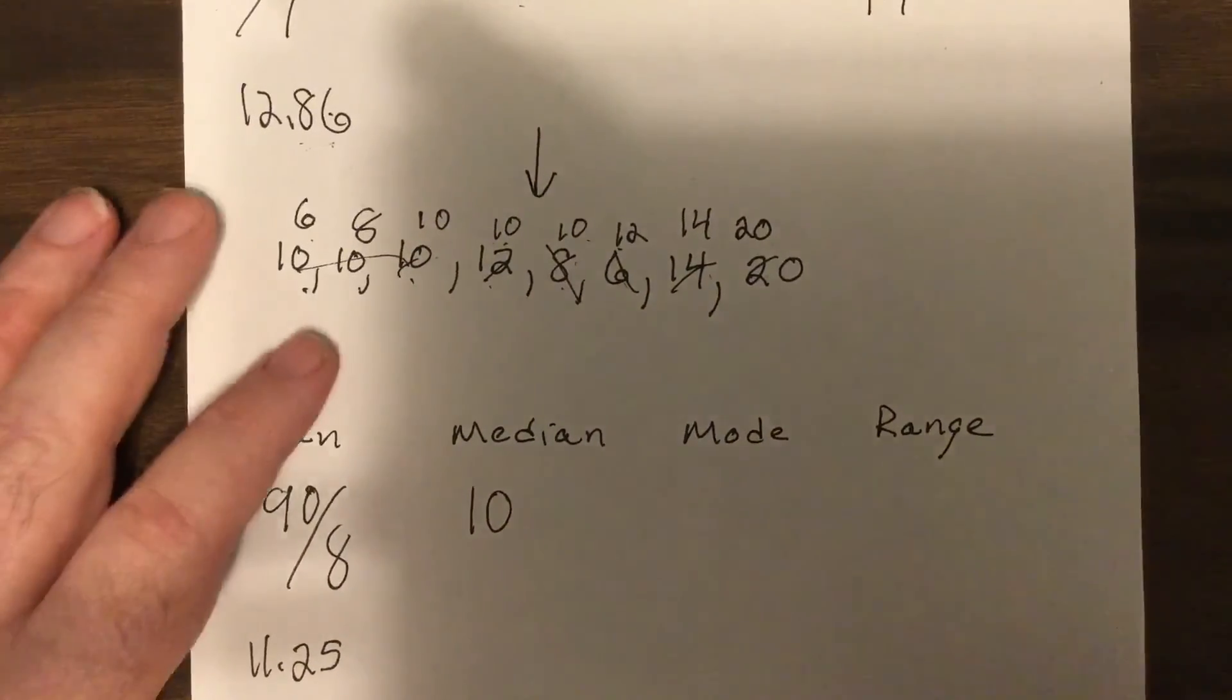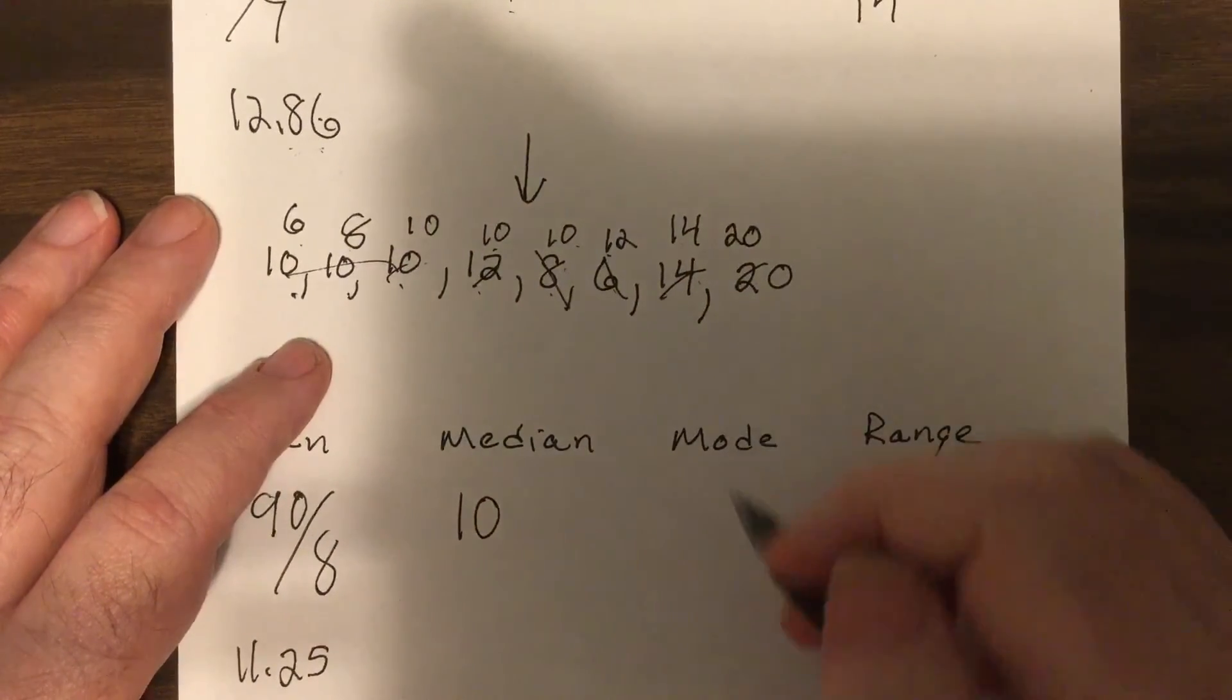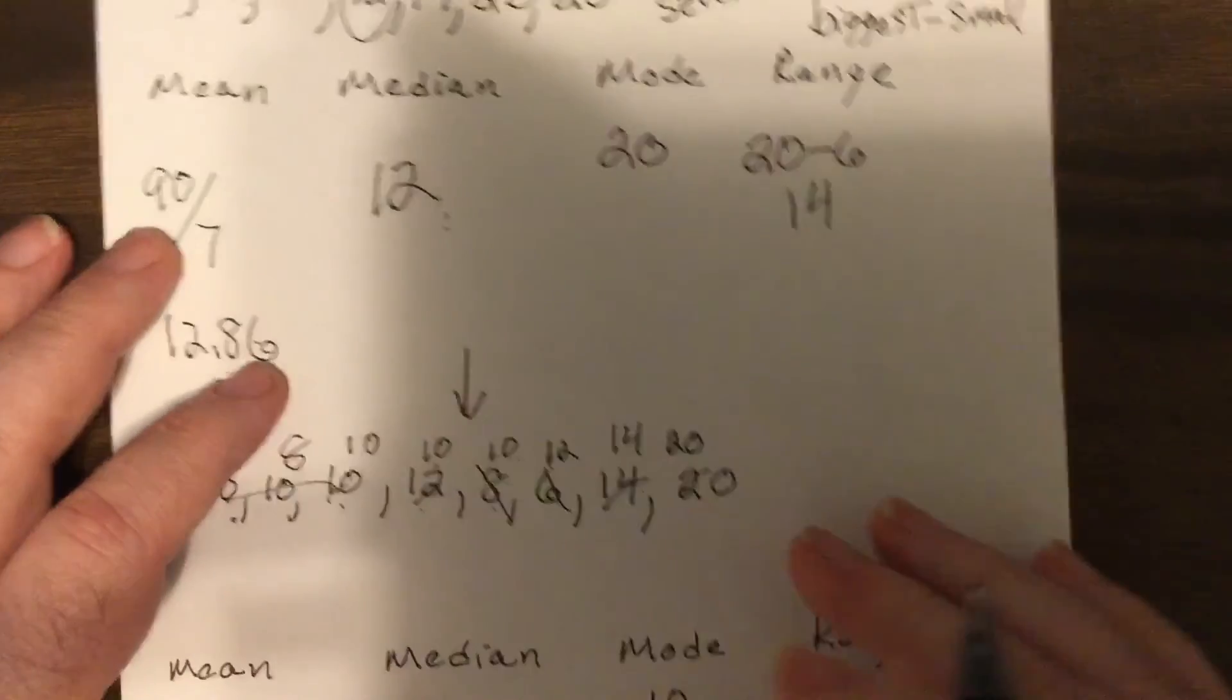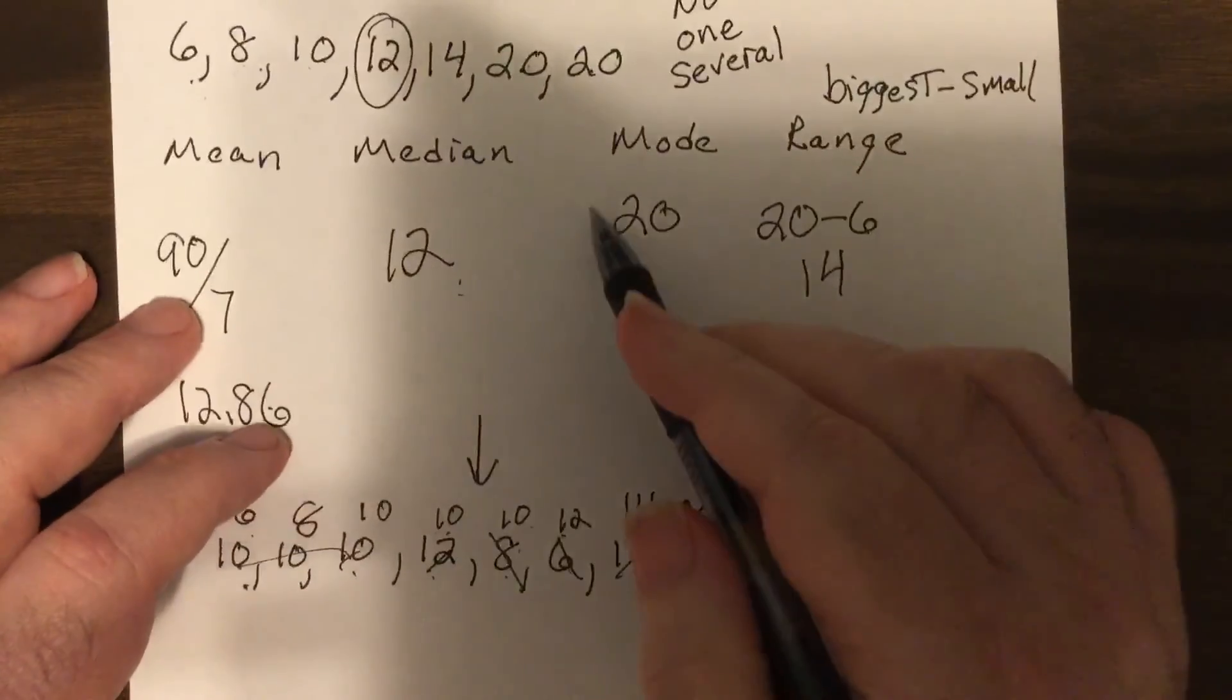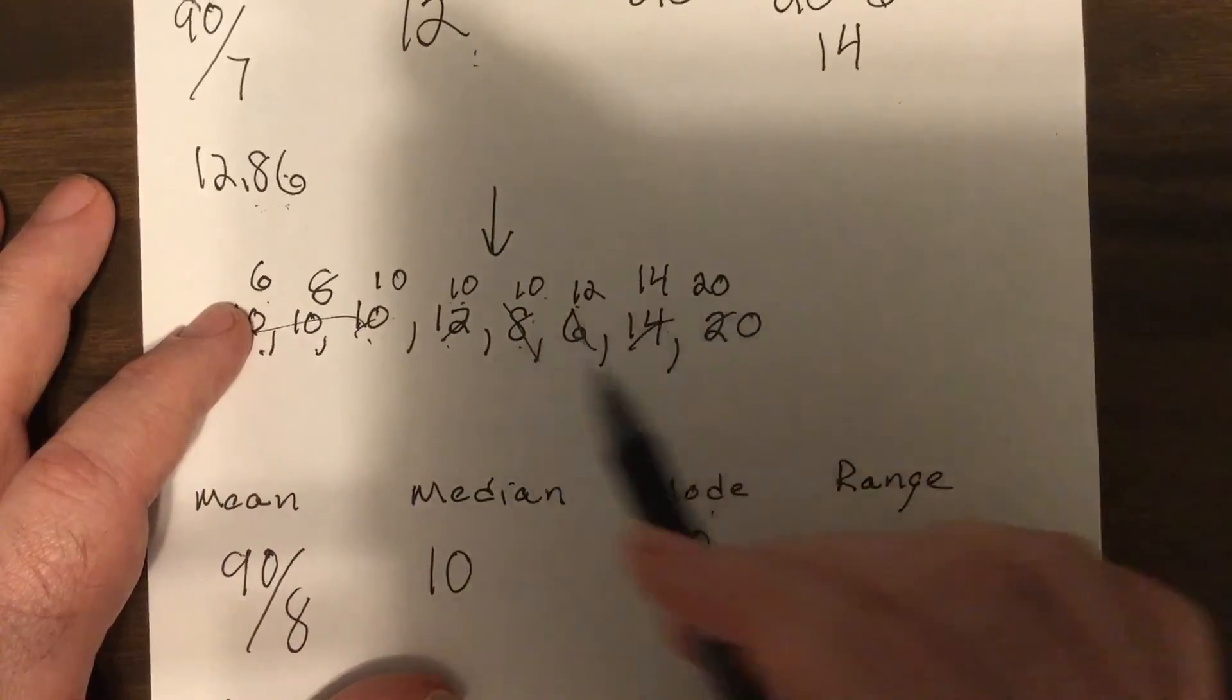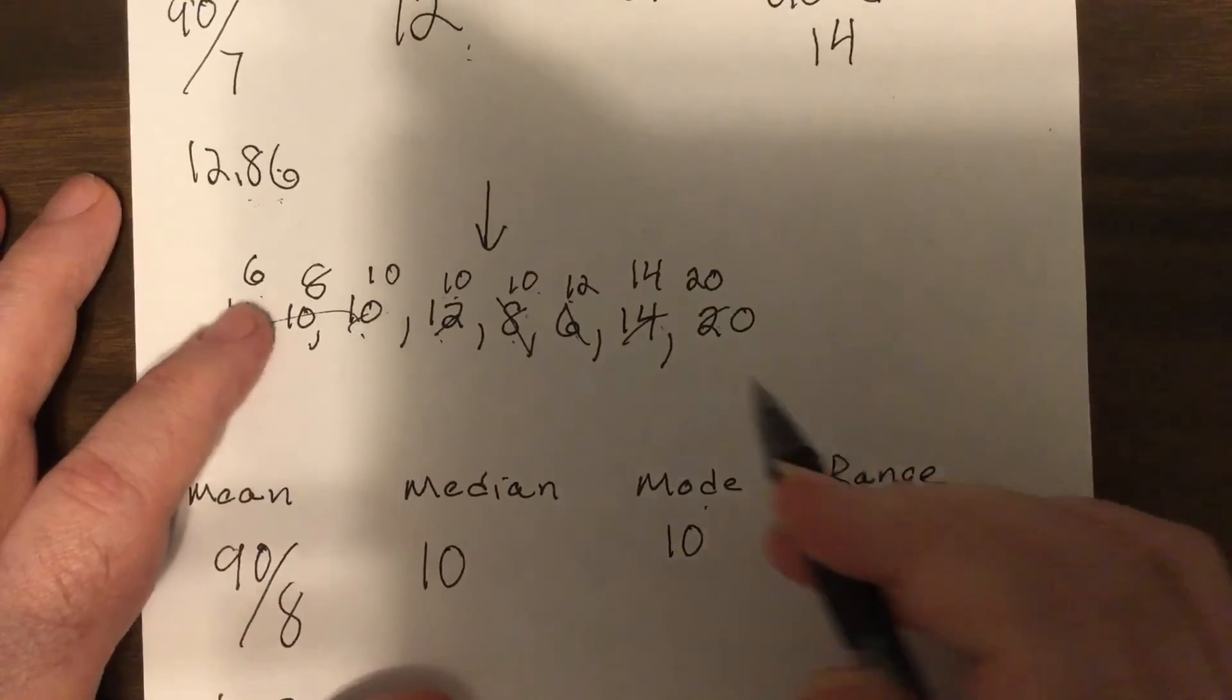The mode would be 10, so I have a mode this time. Could have more than one mode. If 20 occurred three times it'd be 20 and 10.